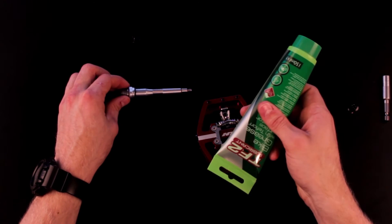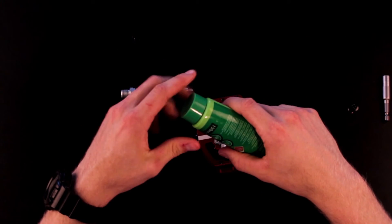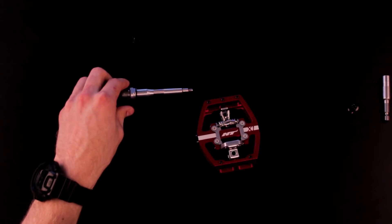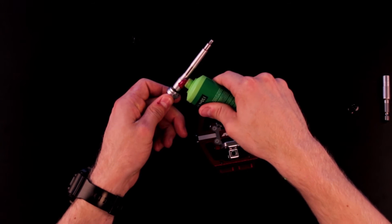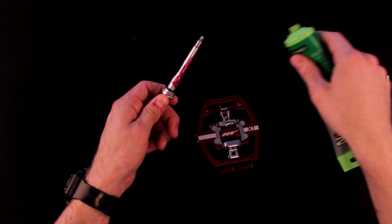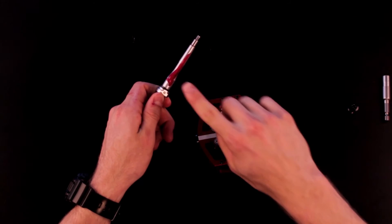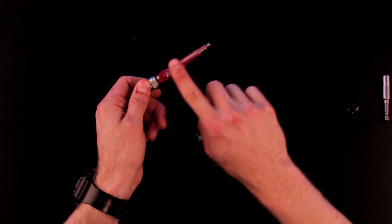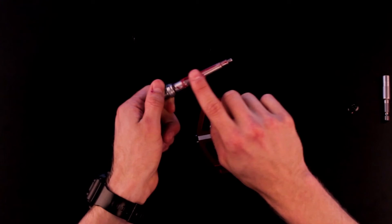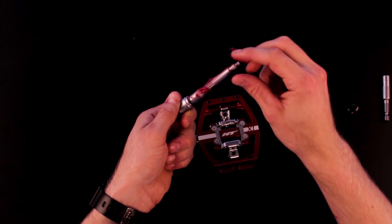Now you'll need to use some Teflon based grease and apply this liberally to the axle. Make sure you get a nice even coating all the way over the axle. It's always good to use a little bit too much than too little because we can always remove any excess at the end.